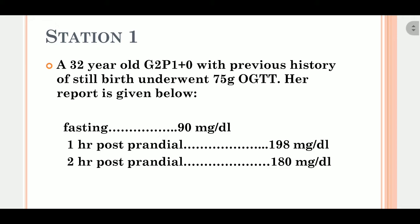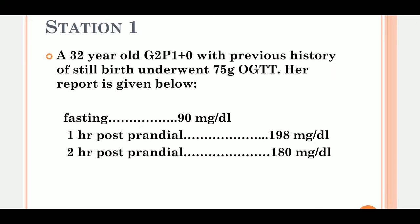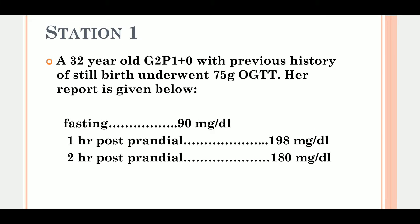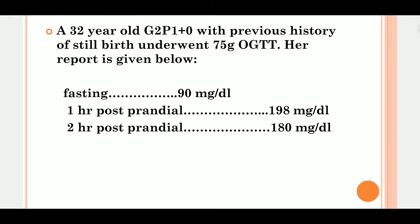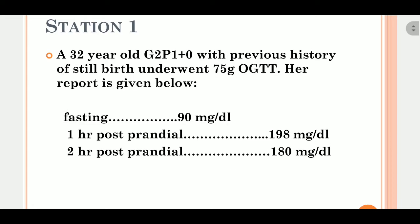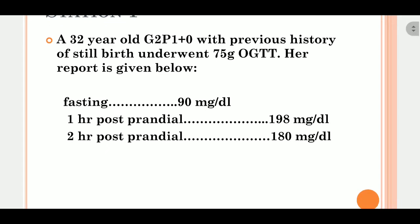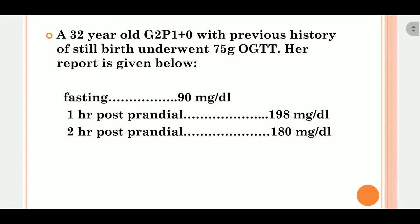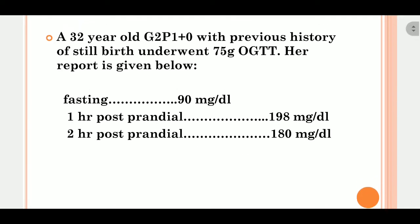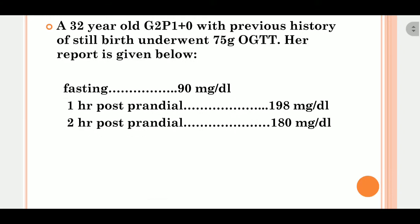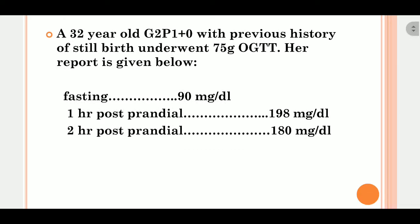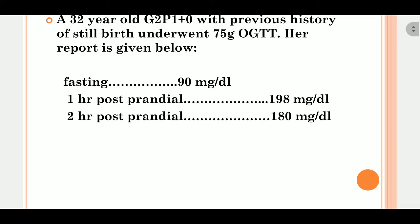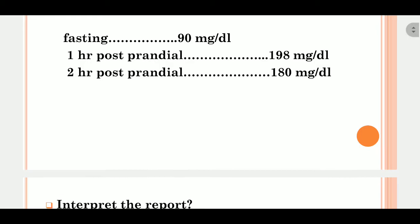Station one: a 32-year-old, gravida 2 para 1 with a previous history of stillbirth, underwent 75 grams OGTT. Her report shows fasting glucose of 90 mg/dL. The 1-hour post-prandial, which should be below 140, is 198 mg/dL, and 2-hour post-prandial is 180 mg/dL. This is a very deranged OGTT report.